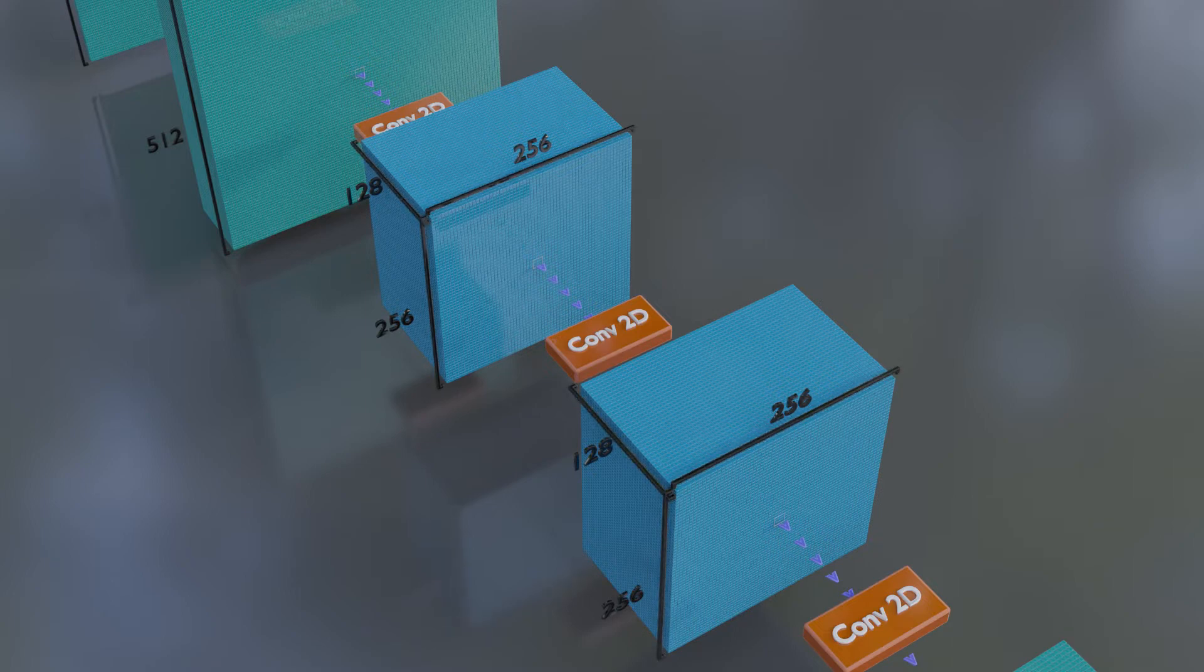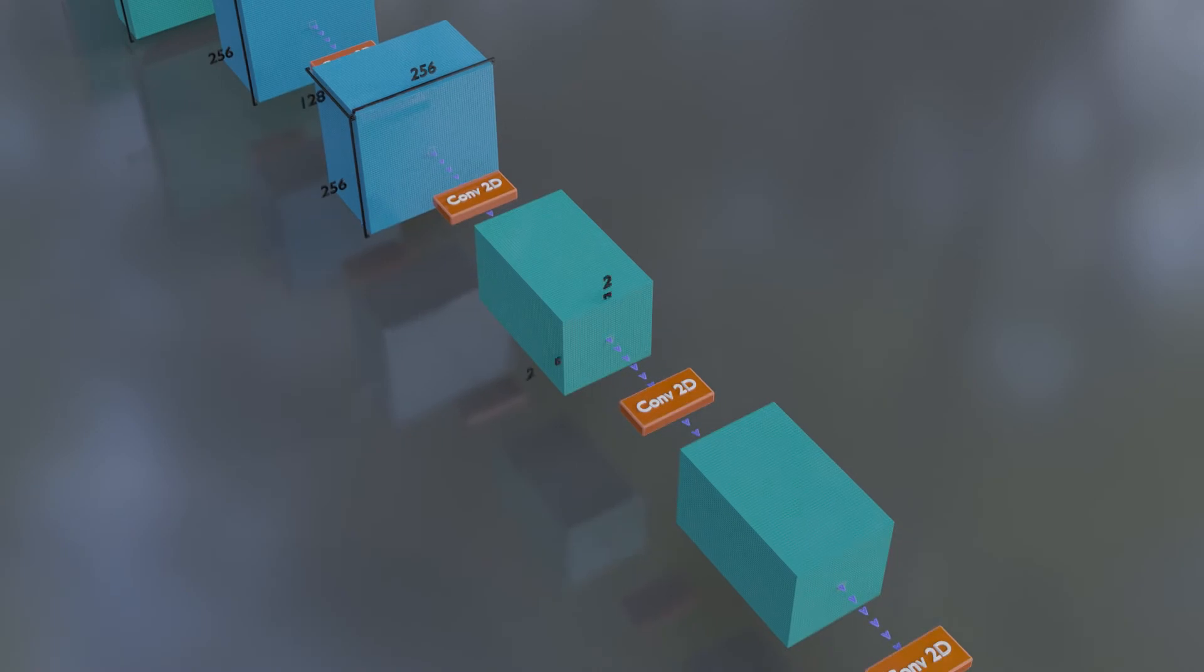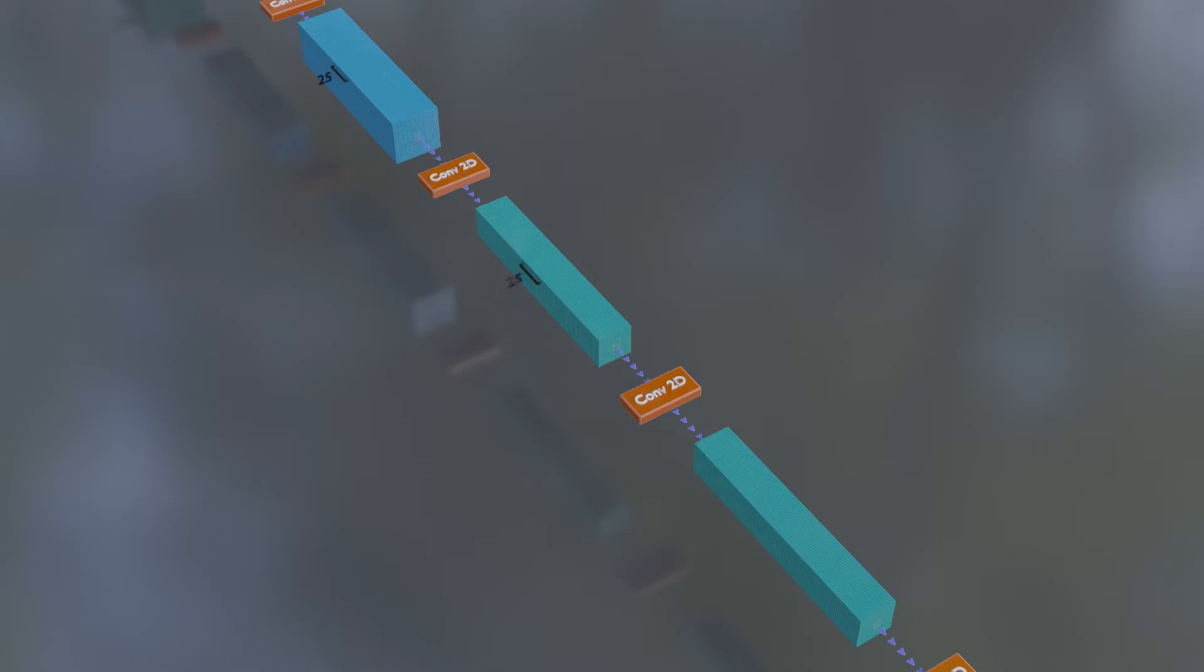Now we get into a repetition of blocks of two convolutional layers. The first layer halves the resolution and doubles the feature count. The second layer simply performs more processing. However, we stop increasing the feature count at 512, even though we continue to decrease the resolution.